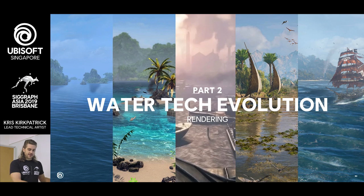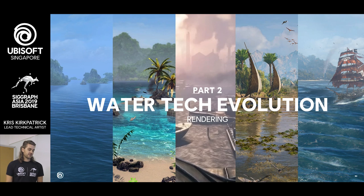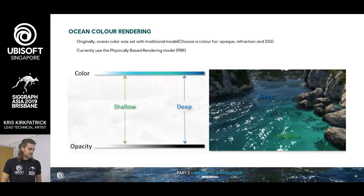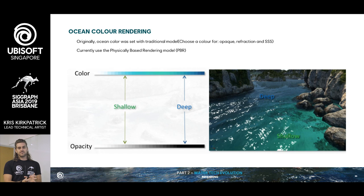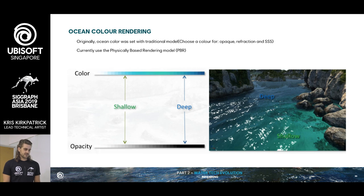So that's a bit about how everything moves and is controlled. Now we get into more of the pretty stuff — what makes our water so beautiful. We'll talk about some rendering features, starting with the ocean color. Back on AC3, it was shaded with the traditional model: you choose a color for the opaque, transparent, refracted, and SSS, applying that based on opacity. So the shallow water would have one color, deep color would have another. It works, but it's definitely not realistic by any means.